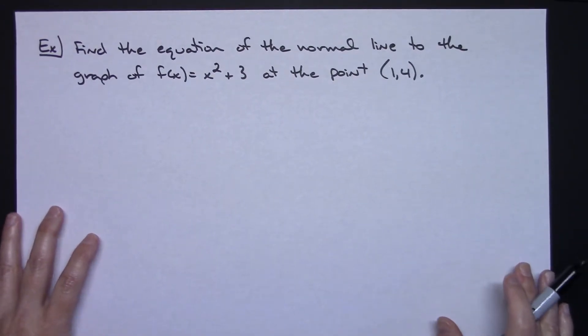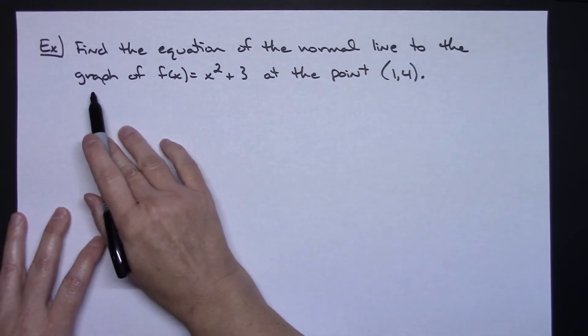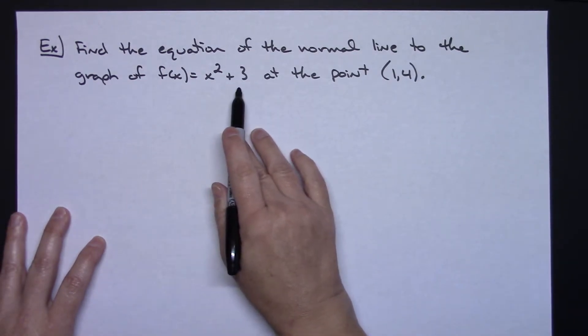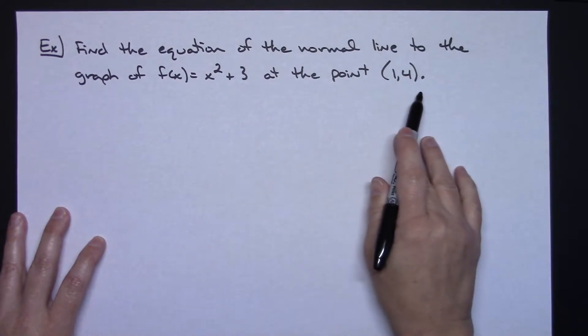Let's suppose it says find the equation of the normal line to the graph of f(x) = x² + 3 at the point (1,4).